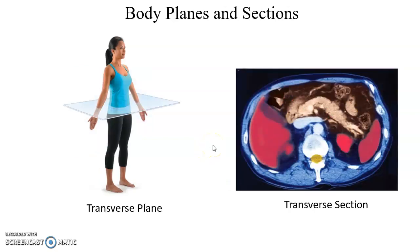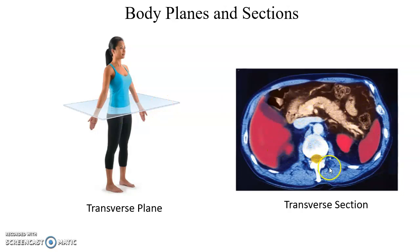Then we have the transverse plane. The transverse plane cuts through the body, giving you a top part and a bottom part — a superior piece and an inferior piece. Here is a transverse section going through the abdomen, allowing us to see part of the liver, some of the intestines, and the spinal cord.